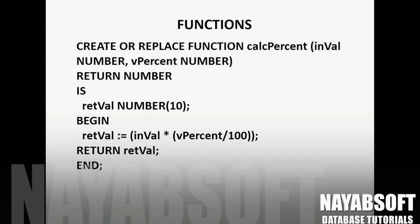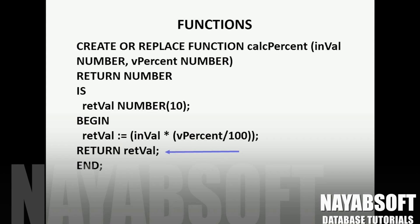After begin, the executable part starts. In that we are calculating the percentage of the first parameter. The percentage value is the second parameter. This percentage will be accepted by the function as the second parameter. We will assign this to the variable we declared in the declarative part, and in the return statement we will return its value.